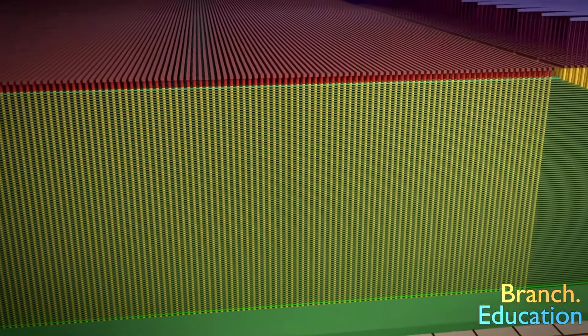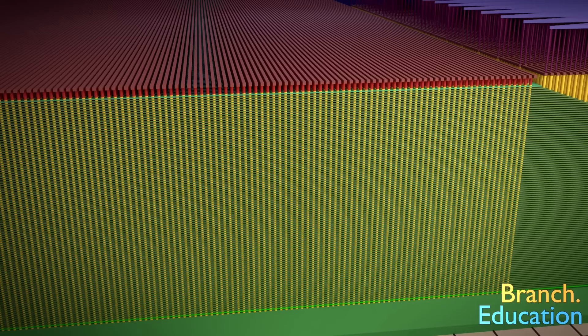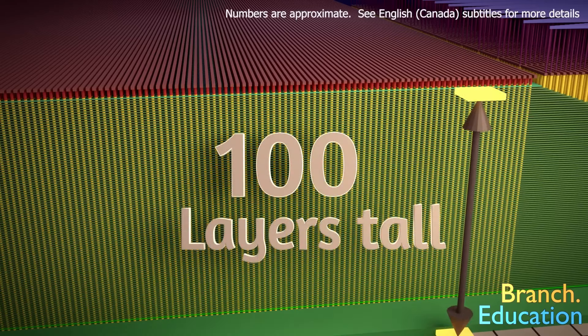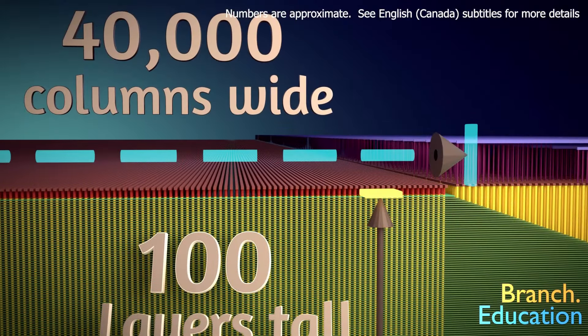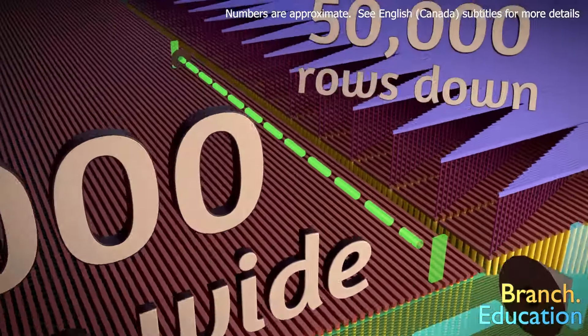To reach a terabyte of storage capacity in a single chip, this memory cell is copied, and it's copied a lot. First, these memory cells are stacked 100 layers tall, and then these stacks of cells are copied 40,000 columns across, which is then copied 50,000 rows down.